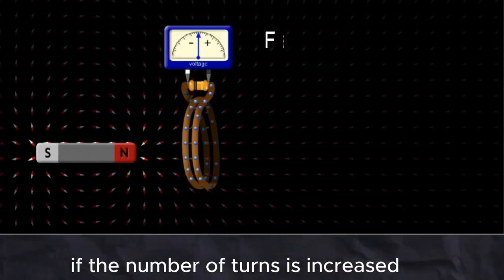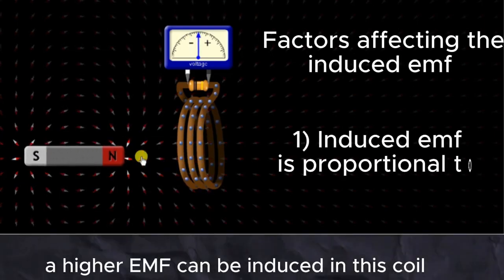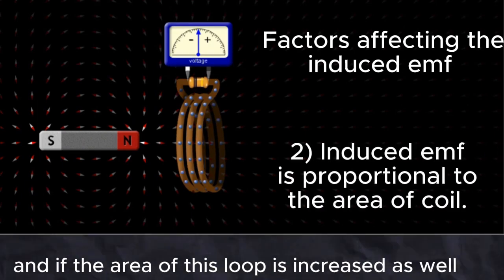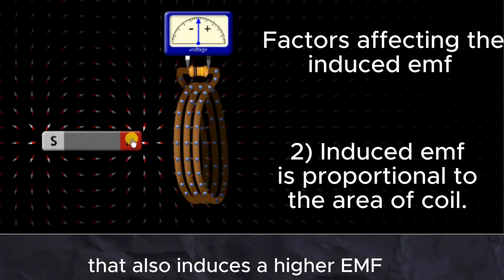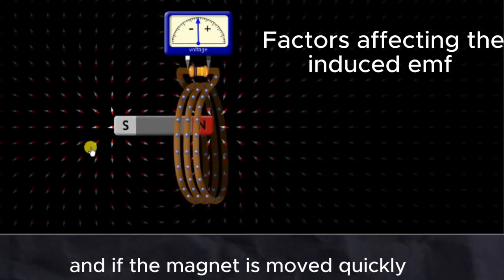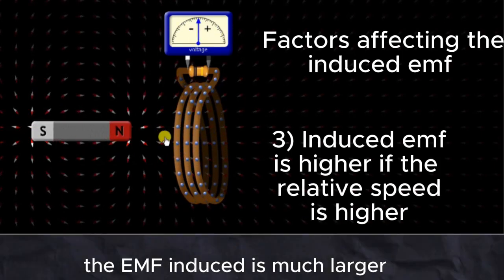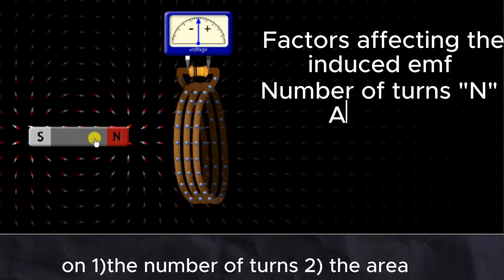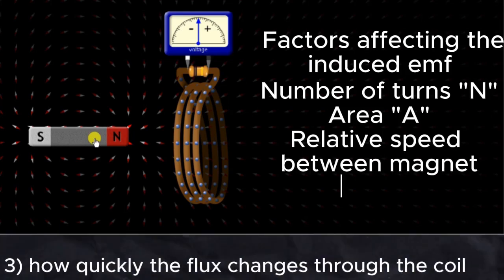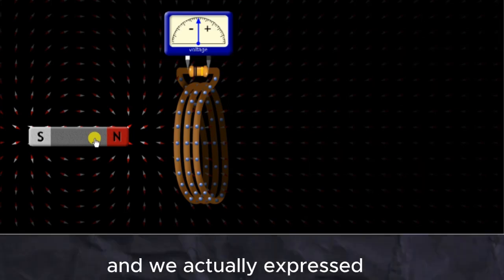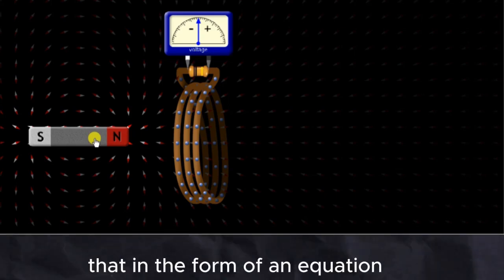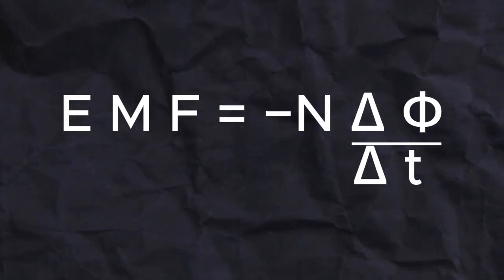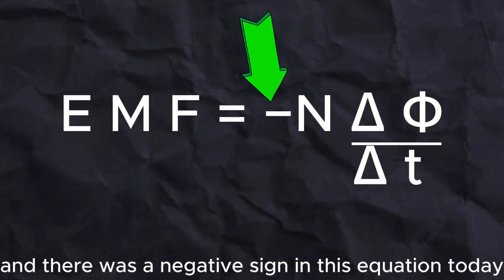If the number of turns is increased, a higher EMF can be induced in this coil. If the area of this loop is increased as well, that also induces a higher EMF. And if the magnet is moved quickly, the EMF induced is much larger. So the induced EMF depends on the number of turns, area, and how quickly the flux changes through the coil of wire. We actually expressed that in the form of an equation: induced EMF is equal to number of turns N times delta phi over T. And there was a negative sign in this equation.